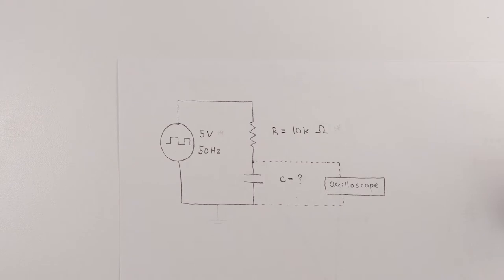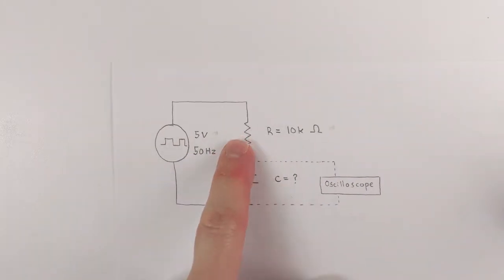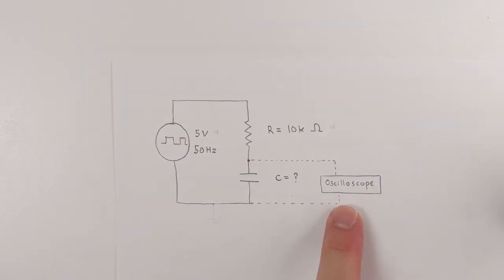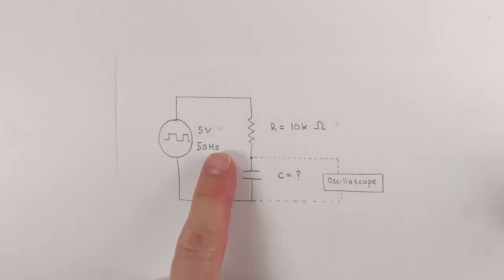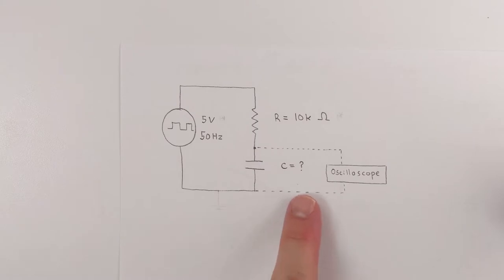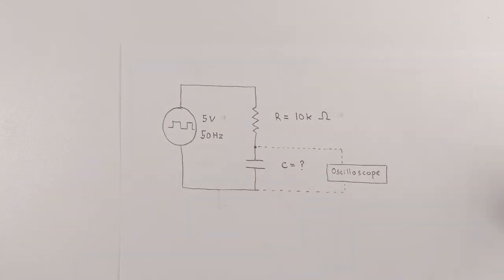I'm feeding a 50 Hz square wave into a resistor and a capacitor, and I'm probing it with an oscilloscope between the resistor and capacitor. And we're going to figure out what that value is.